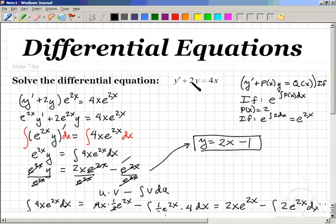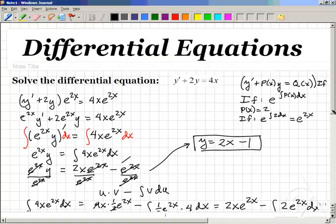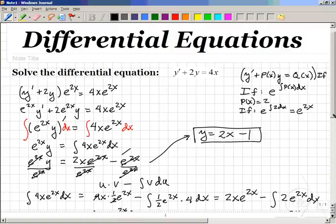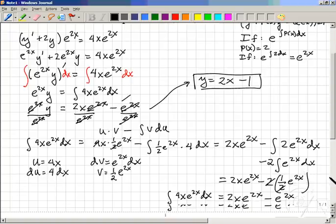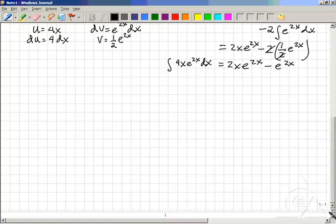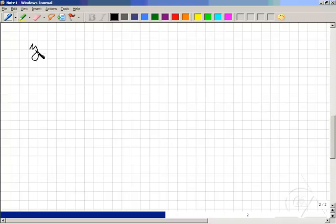We can check this work simply by finding y and y prime, and checking to see if those substitutions will work out to 4x. So, we'll put this on yet one more sheet of paper. Our original problem was y prime plus 2y is equal to 4x. And our solution was y equals 2x minus 1. Now, if we found its derivative, y prime works out to simply 2.